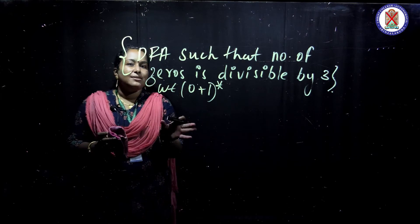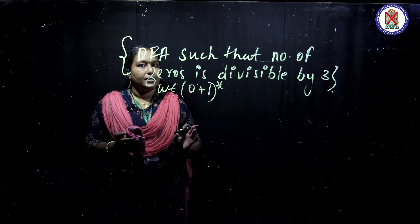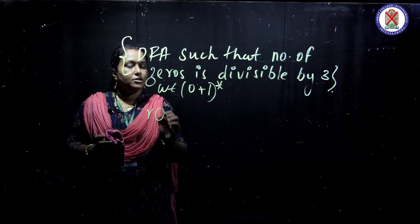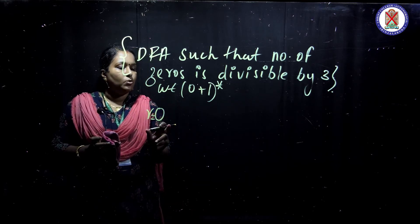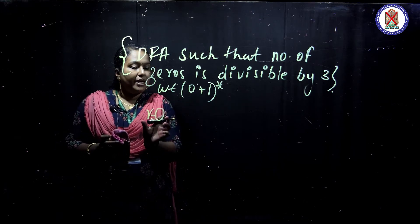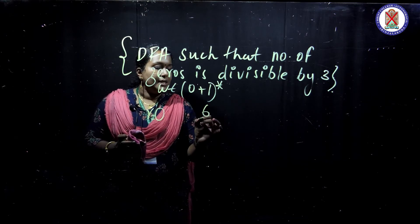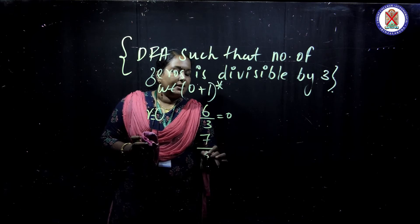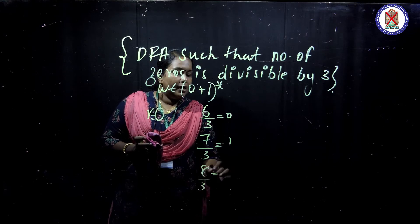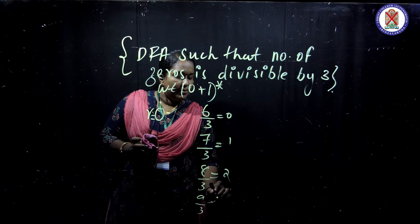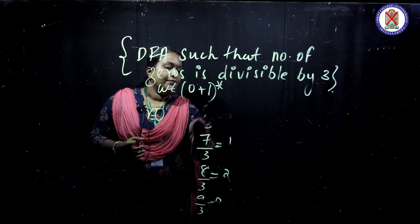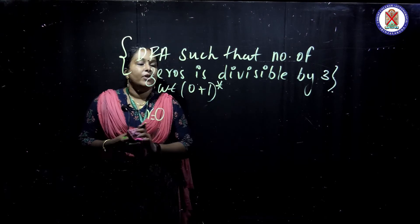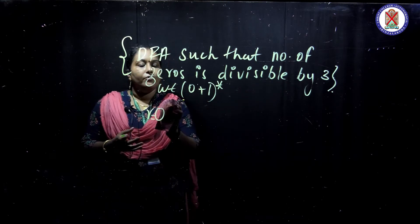For that we use an entirely different concept for drawing a DFA for divisibility. If a number is divisible by 3, it leaves remainder zero. For example, 6 divided by 3 leaves remainder 0; 7 divided by 3 leaves remainder 1; 8 divided by 3 leaves remainder 2; 9 divided by 3 leaves remainder 0. Whenever we check divisibility by 3, we get only 3 possible remainders.